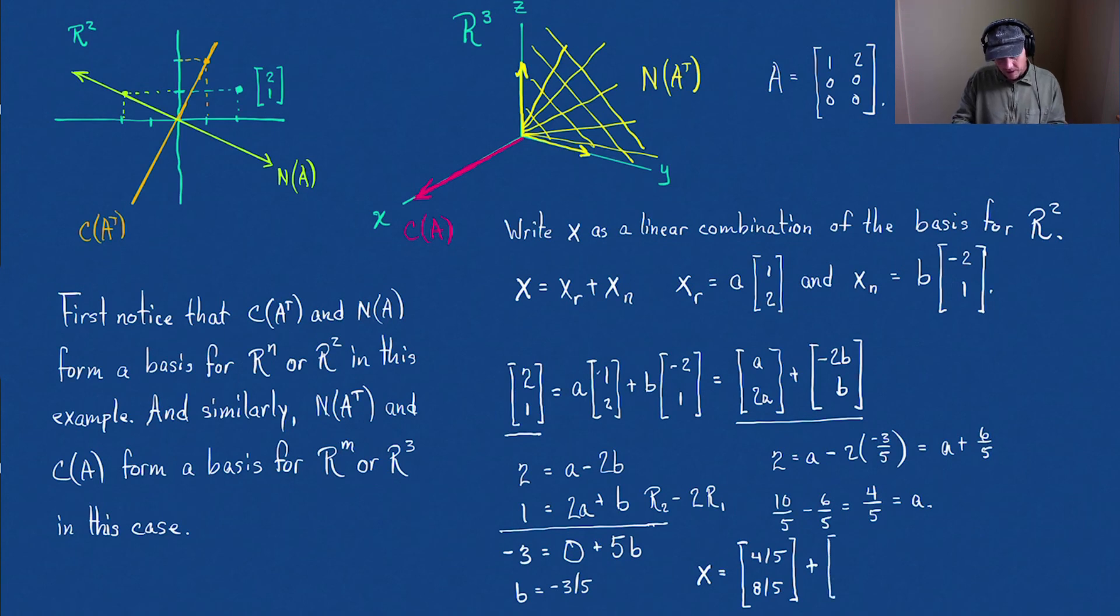The vector in the row space plus the vector in the null space. Well, the vector in the null space is the B. So B was negative 3 fifths. So this is going to be the vector of 6 fifths and minus 3 fifths. OK. And that is how we can write the vector X as a linear combination of a basis formed by the row space and the null space. I hope that helps. Thanks for watching.